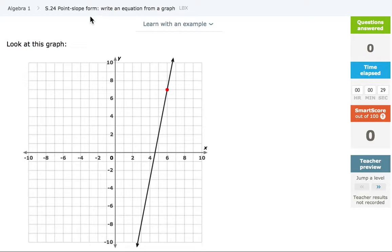Point-slope form. Write an equation from a graph. Recall that to write an equation in point-slope form, we need two things: a point and the slope.